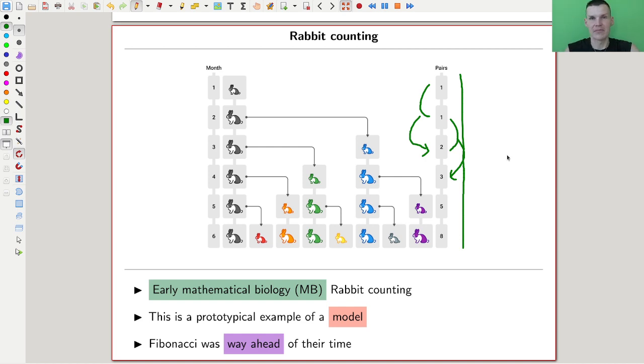Essentially all of math biology is some version of this rabbit counting, maybe in more sophisticated ways. Fibonacci was way ahead of their time, like hundreds of years, because biology really took a long time to become a science in a sense of certain rigor. The more real world is in your science, the more difficult it was, historically speaking, to treat it scientifically rigorous.